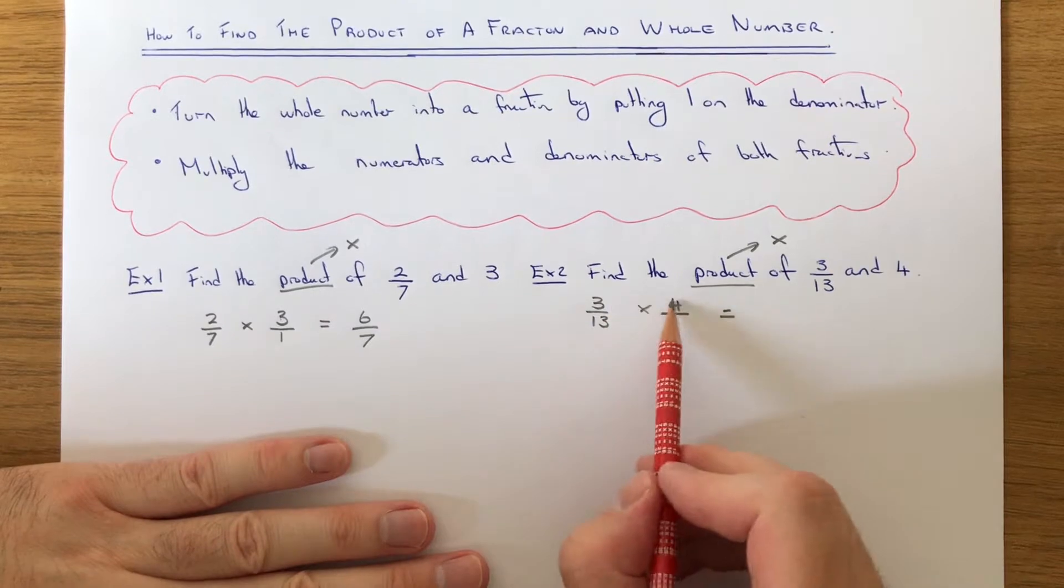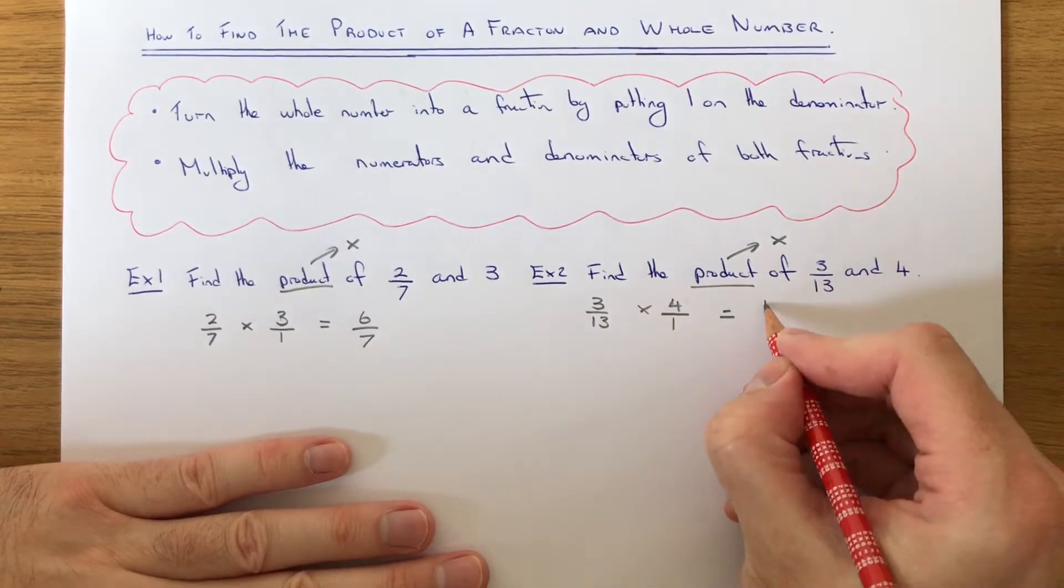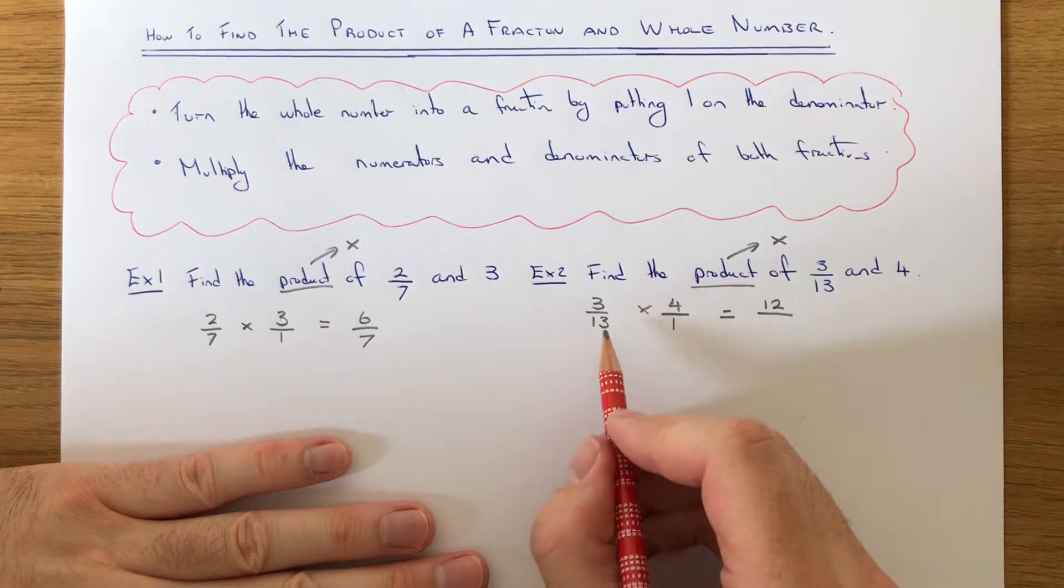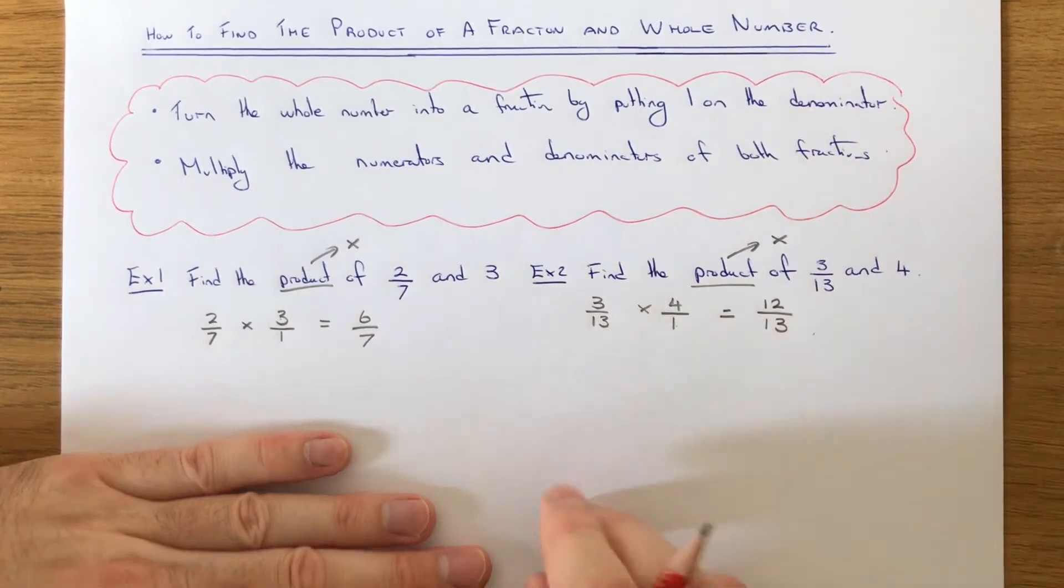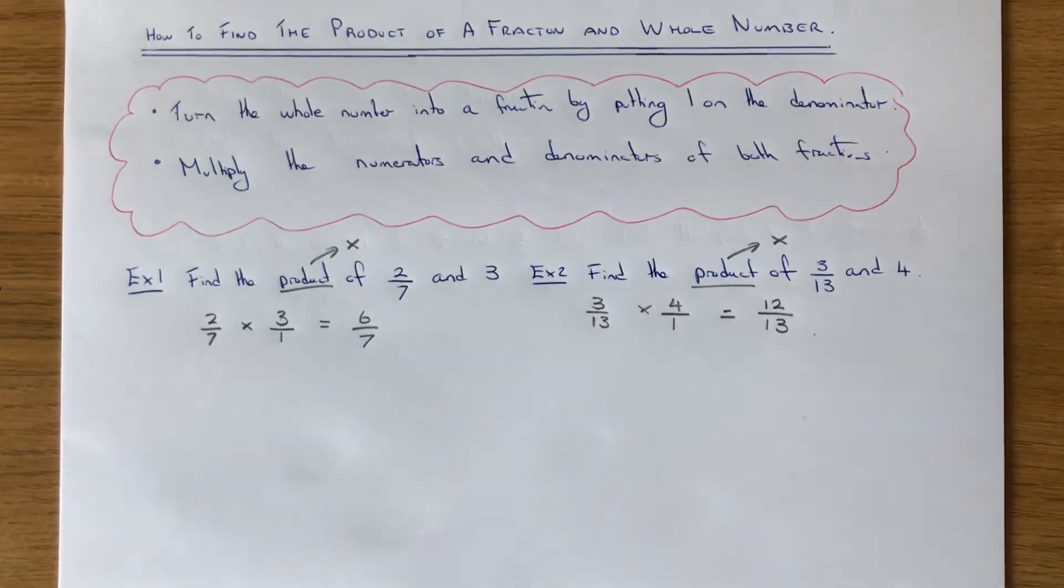Then multiply the numerators together. 3 times 4 is 12. And the denominators, 13 times 1 is 13. We get a final answer of 12/13.